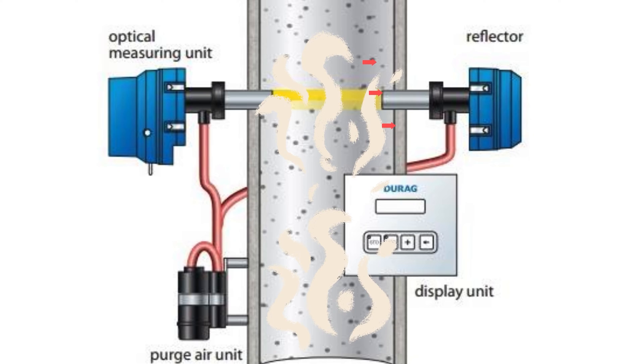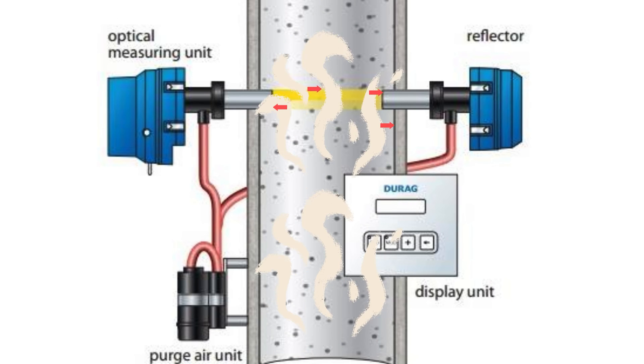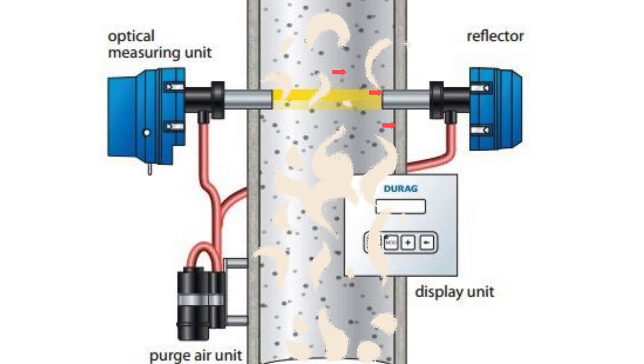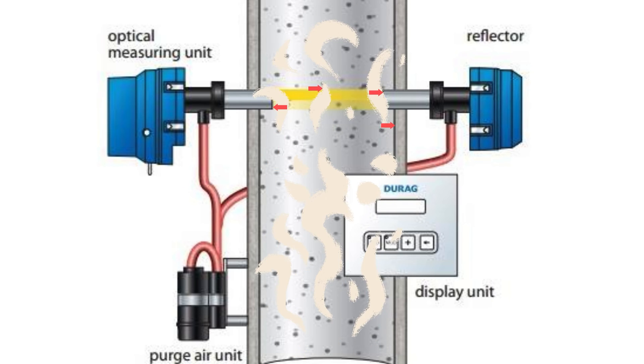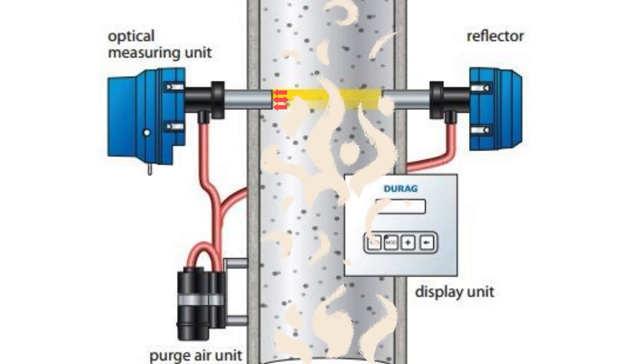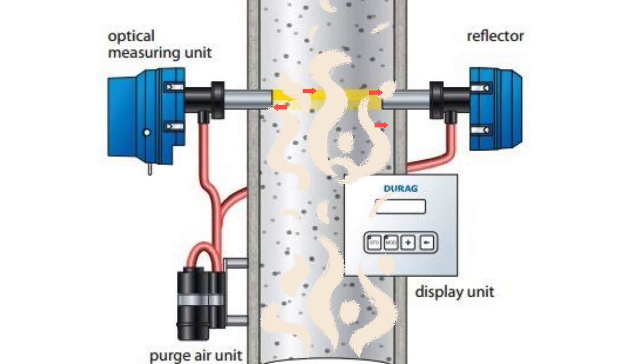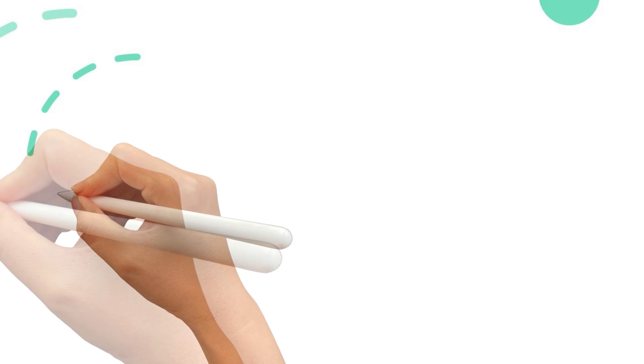Dust particles in the stack will absorb and scatter the transmitted beam of light, so the returned light will be less than the transmitted light. The ratio of the returned light to the transmitted light is called the transmission. One minus the transmission is referred to as opacity.